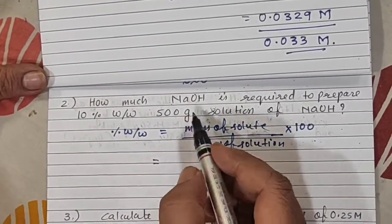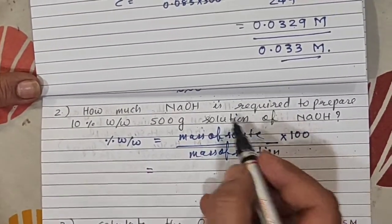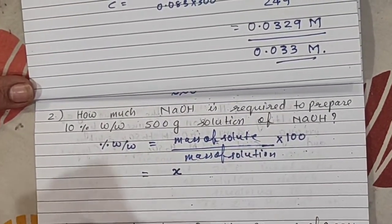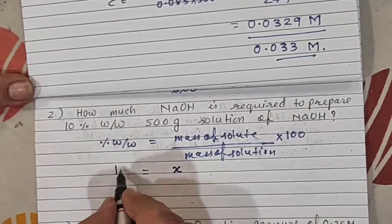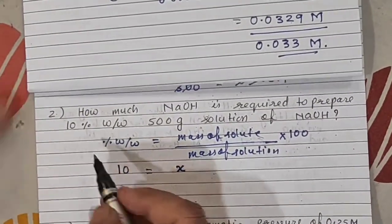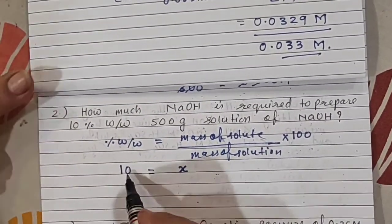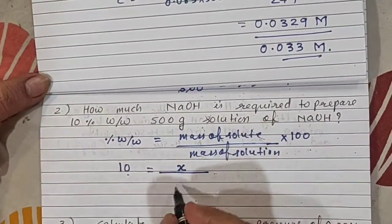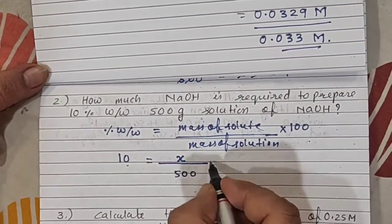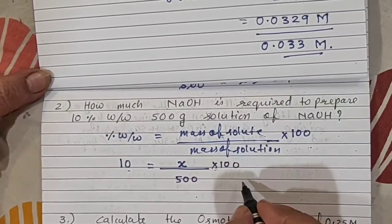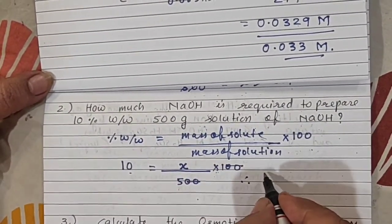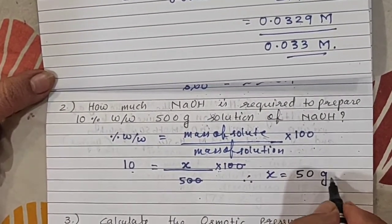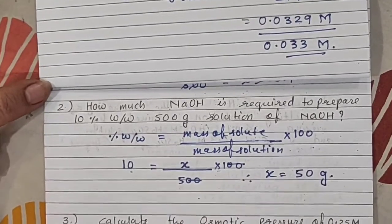What is our solute? We don't know. How much NaOH is required? So we don't know solute, let it be X. % W/W 10 is given. So 10 equals X upon mass of solution is 500 times 100. Therefore, 10 times 500 divided by 100. 20 cancel, so X equals 50. 50 grams will be the answer.